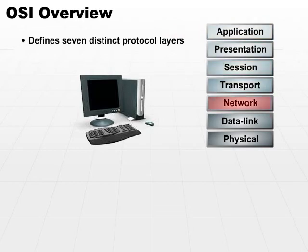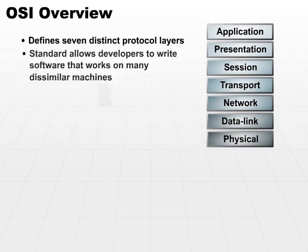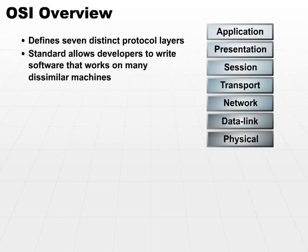So the message goes down the stack, across, and on the other machine we reverse the process and end up presenting a message up from our application layer into the resulting application on the other side. This standard allows developers to write software that will work on many dissimilar machines. We don't care what the target machine is — all we care is that the target machine supports our standard.